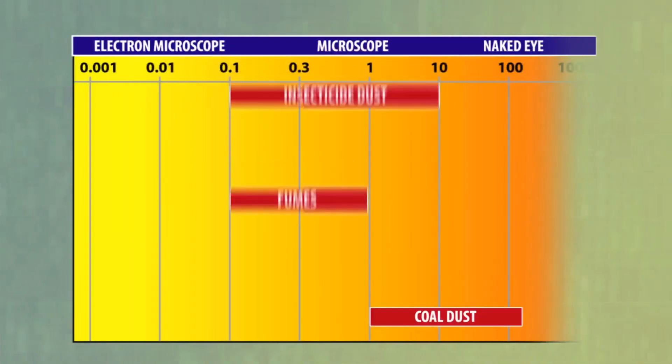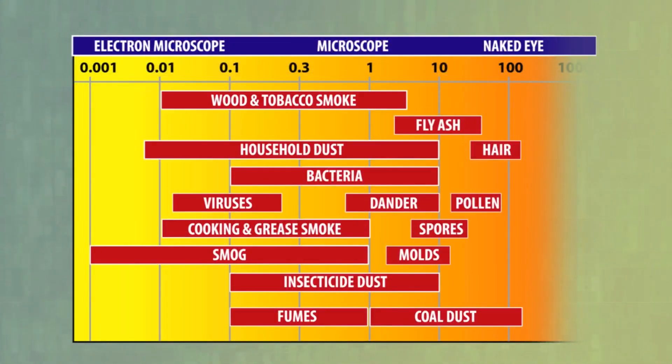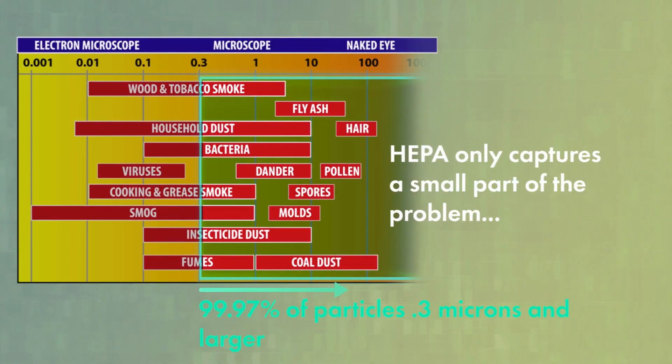This chart shows the size of particles that float in our air. HEPA only captures a small part of the problem.